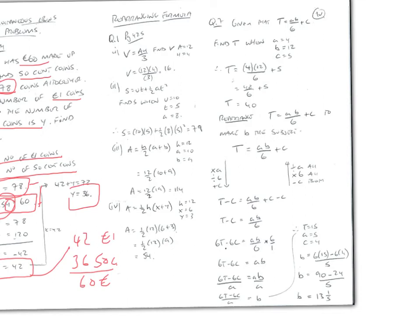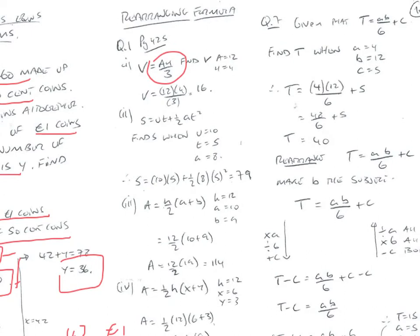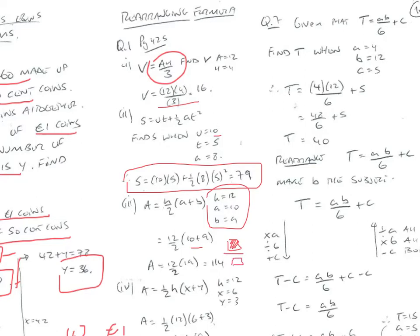Now let's look at rearranging formulae. We're often given formulas and the values of variables. For example, if v = ah/3, find v when a=12 and h=4. Similarly, s = ut + ½at²: find s when u=10, t=5 — type it into your calculator and s=79. For A = h/2 × (a+b), pop the values in using the fraction button on the calculator to follow BIMDAS rules correctly.